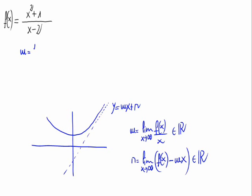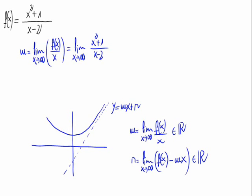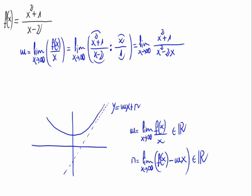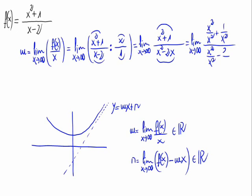Let's begin calculating m: the limit of f of x divided by x when x approaches infinite. This is the limit of x squared plus 1 divided by x minus 2, all divided by x when x approaches infinite. We write this as x divided by 1 to make it easier, giving us x squared plus 1 divided by x minus 2 times x, which is x squared minus 2x. To solve this limit, we divide the numerator and denominator by x with the highest exponent, and since we have exponent 2 on both, let's divide everything by x squared.